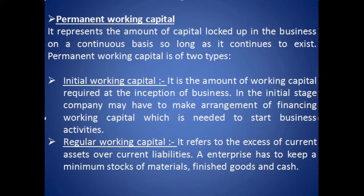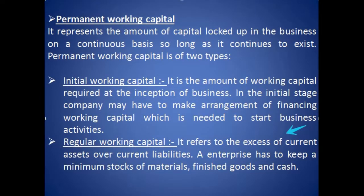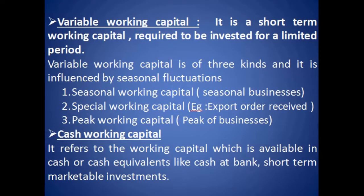Next type is permanent working capital. As the name suggests, this working capital amount is locked up in the business on a continuous basis. Permanent working capital is of two types: first, initial working capital — the amount required at the start or inception of the business; second, regular working capital — it refers to the normal current assets minus current liabilities which an organization has to keep at all times throughout the year.